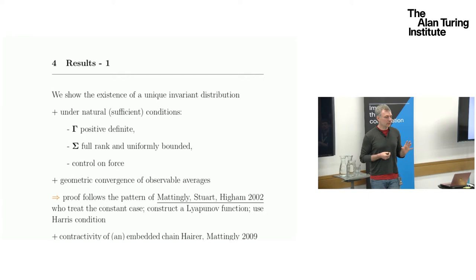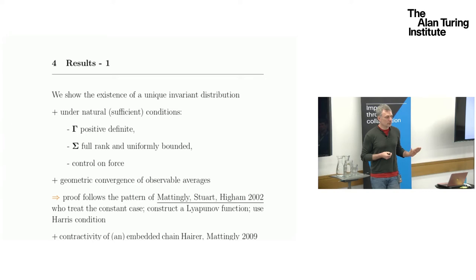We need the noise to be full rank, which is kind of expected as well. If you lose stochasticity in one direction, then maybe you get trapped. We need it to be uniformly bounded. If you have insane noises as you go away in your space, then good things are not going to happen. And we need some kind of control on force, which is related to the Harris convergence condition.